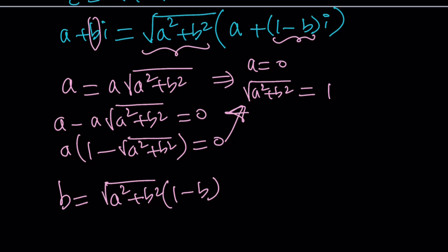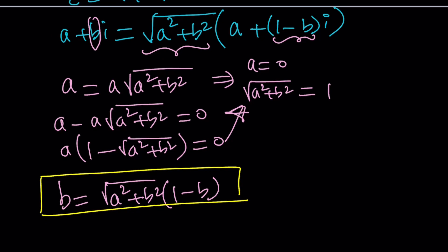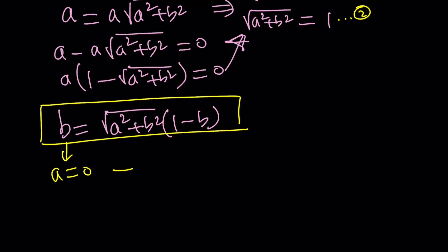Let's look at the results from the first equation. I got two results. Result 1 is A equals 0, which is fairly simple. Let's replace A with 0. If A equals 0, we get B equals the square root of B squared times 1 minus B. Since this equation only contains B we should be able to solve it. You could square both sides, but that's not necessary — what is the square root of B squared?